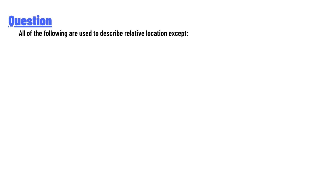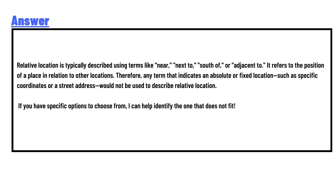Relative location is typically described using terms like 'near,' 'next to,' 'south of,' or 'adjacent to.' It refers to the position of a place in relation to other locations.